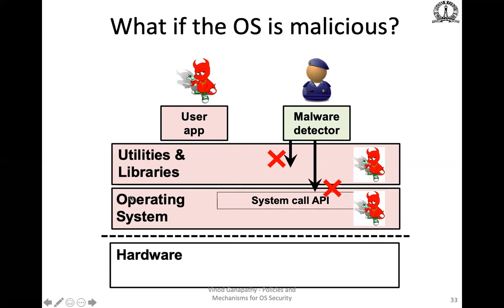A rootkit is malware that infects the operating system. The key advantage for attackers is that rootkits allow malware to hide from malware detectors, since commodity malware detectors assume the OS is part of the TCB. If the system call API is compromised, the OS can lie to the malware detector.